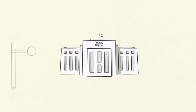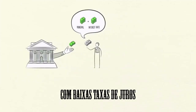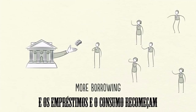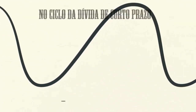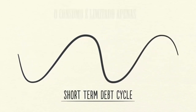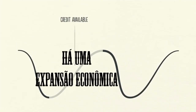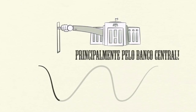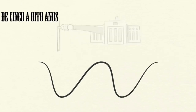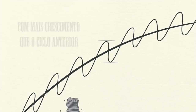If the recession becomes too severe and inflation is no longer a problem, the central bank will lower interest rates to cause everything to pick up again. With low interest rates, debt repayments are reduced and borrowing and spending pick up, and we see another expansion. The short-term debt cycle typically lasts five to eight years and happens over and over again for decades. But notice that the bottom and top of each cycle finish with more growth than the previous cycle and with more debt.